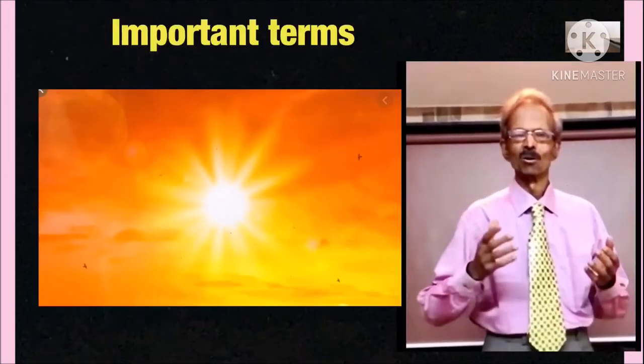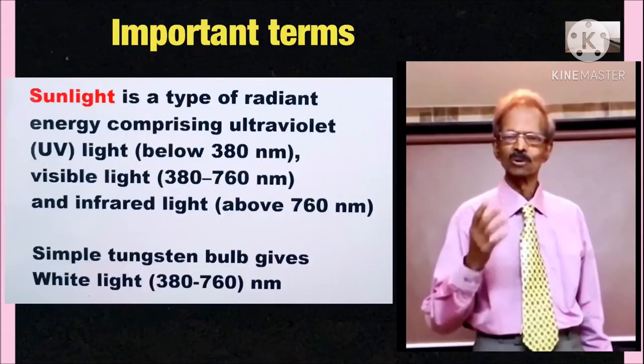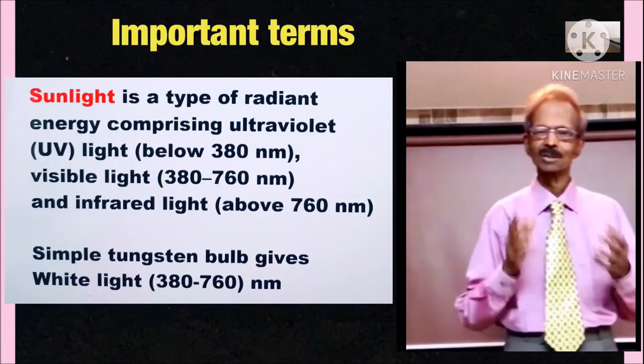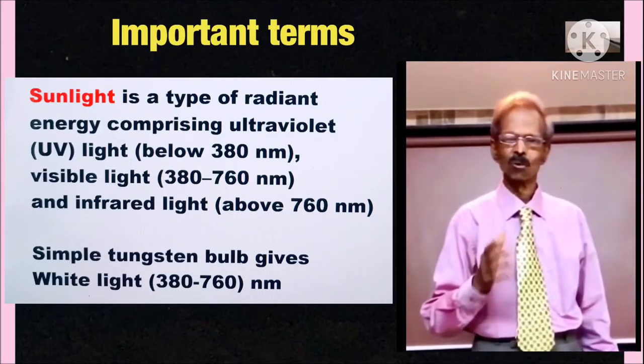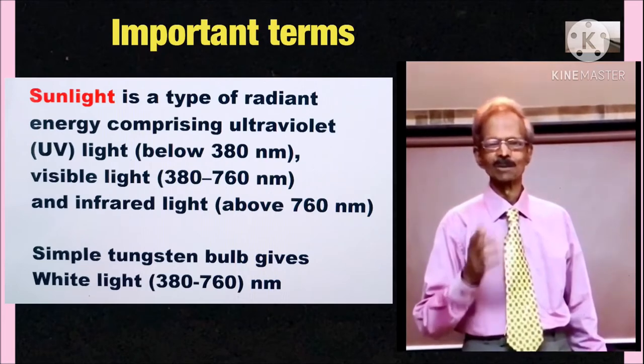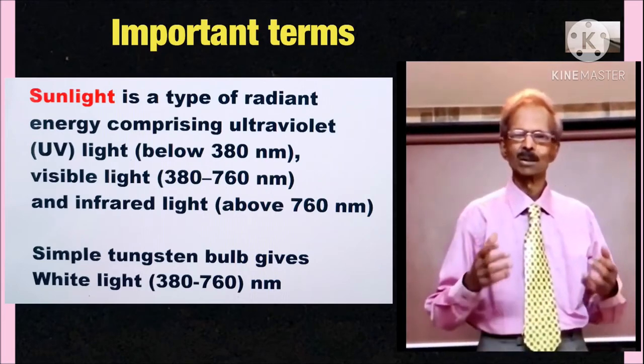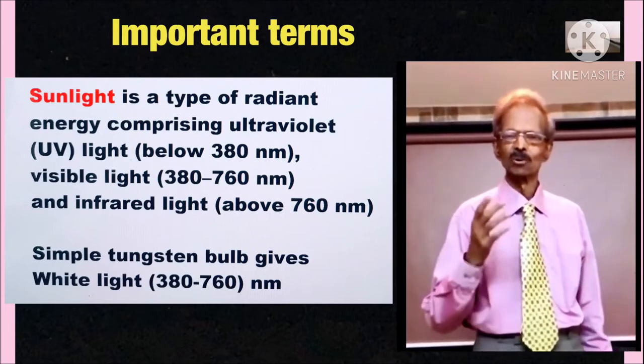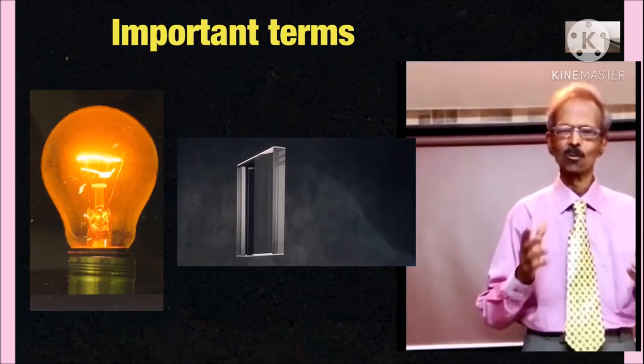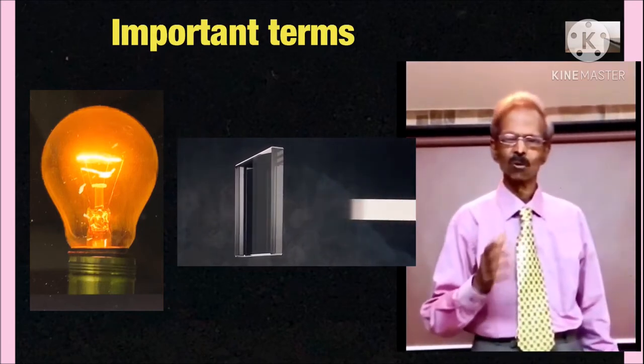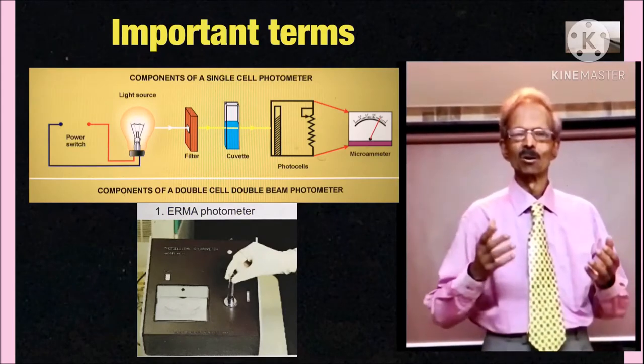Sunlight is a type of radiant energy comprising ultraviolet light below 380 nanometers, visible light 380 to 760 nanometers, and infrared light above 760 nanometers. A simple tungsten bulb gives white light 380 to 750 nanometers, and photometer uses simple tungsten bulb.